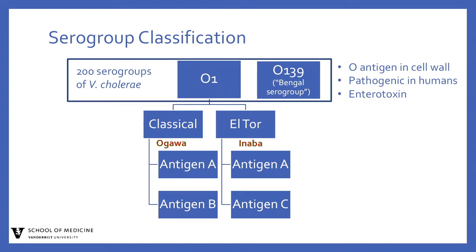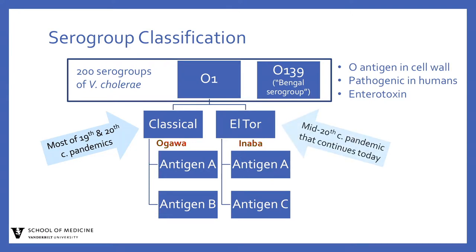The classical biotype was responsible for most, if not all, of the six great cholera pandemics that swept through the world in the 19th century and early 20th century. The seventh pandemic, which began in the mid-20th century and continues today, is caused by the El Tor biotype.